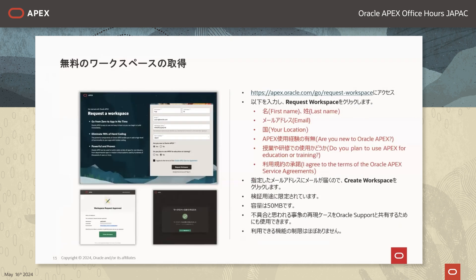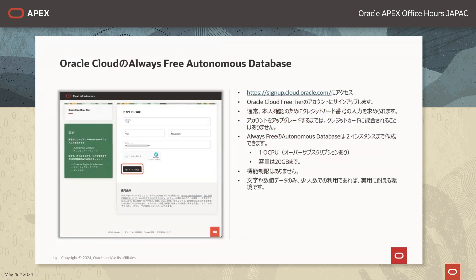次にOracle APEXを無償でお試しいただける方法をご紹介いたします。無償でAPEXをお試しいただける方法は3つございます。1つ目はapex.oracle.comのサイトから無料でご利用いただけるワークスペースを取得いただく方法です。名前やメールアドレスを入力いただくことでワークスペース・開発環境を取得できます。クレジットカードなどご登録いただく必要はございません。APEXが提供しているほぼ全ての機能を使うことができますが容量は50MBが上限なので、機能検証や学習以外の使用はできません。2つ目の方法はオラクルクラウドのAlways Freeで Autonomous Databaseのインスタンスを作成していただく方法です。